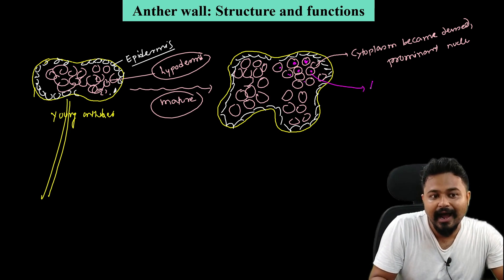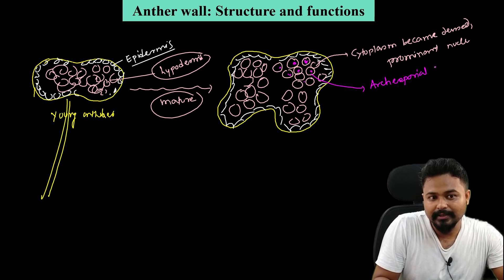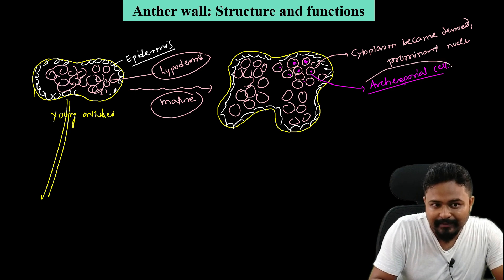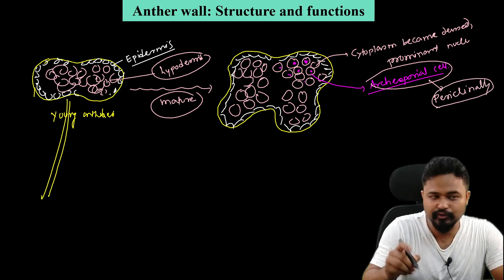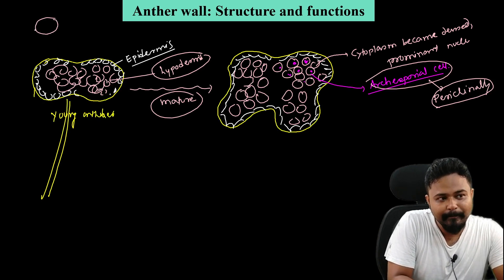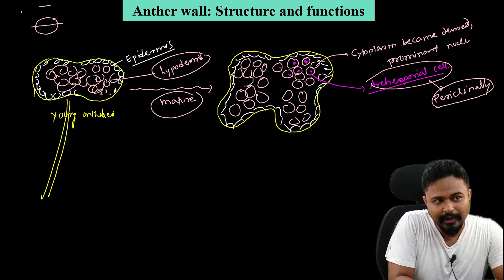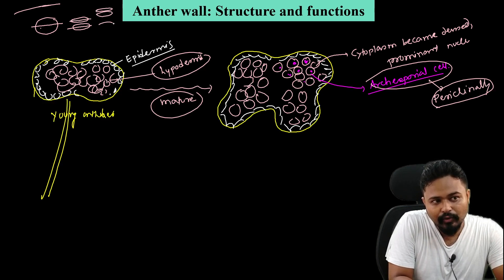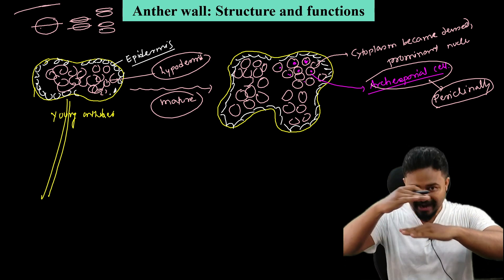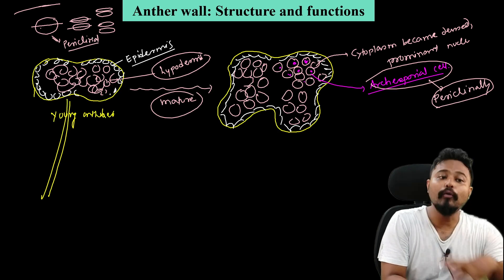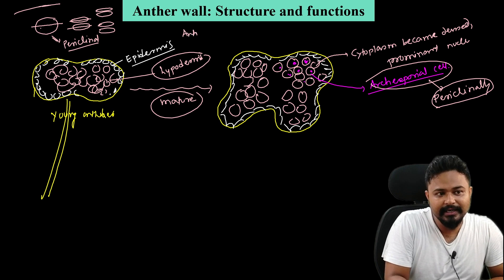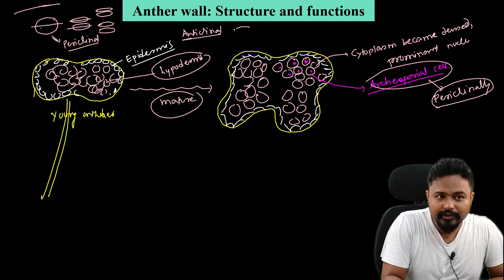The cytoplasm became dense with prominent nuclei. These are archesporial cells. The archesporial cell divides periclinally — a periclinally division. For example, this cell is parallely divided. Parallely divided is the other cell. So if you divide this, it is a periclinally division. The opposite division is called anticlinally division.